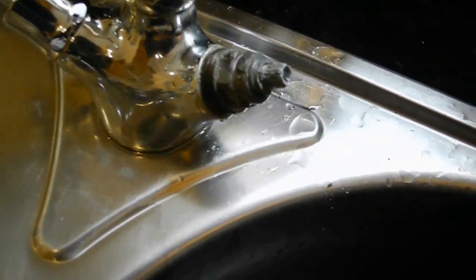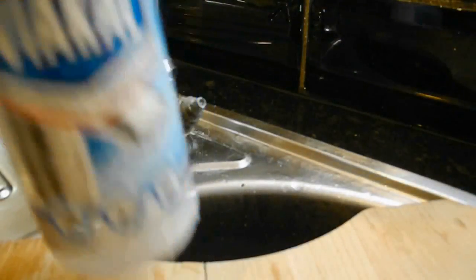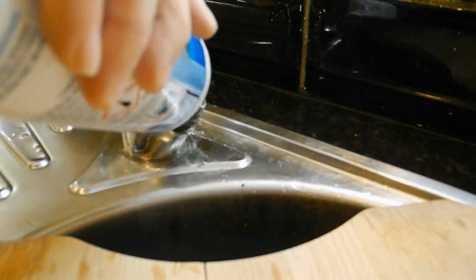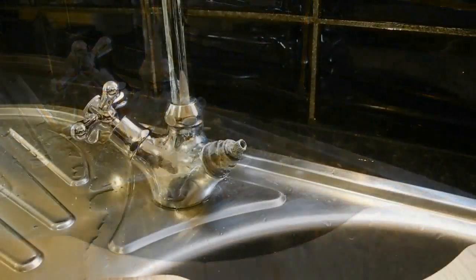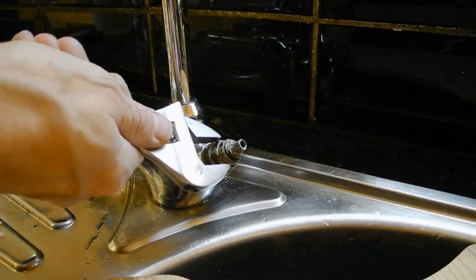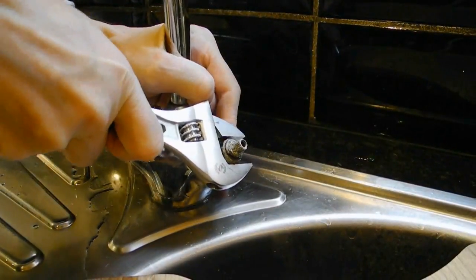Now we see our cartridge, full of lime scale. It is covered with lime scale. That's why we have to apply Viakal again. Be careful, this is acid. And now try to unscrew it.